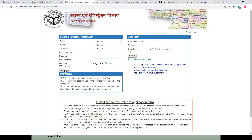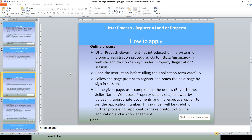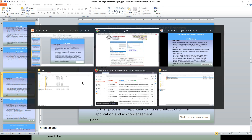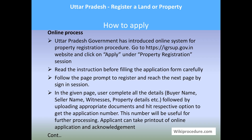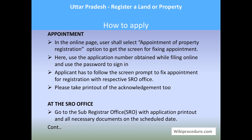On the next page you will be asked to complete the online form with details required for the registration. You will need to enter the details of the buyer, seller, witness, and property details including address. When you enter all these details and submit, you will get an application number for the steps you have completed. This number will be used for further processing. The applicant can also take a printout of the online application and acknowledgement.